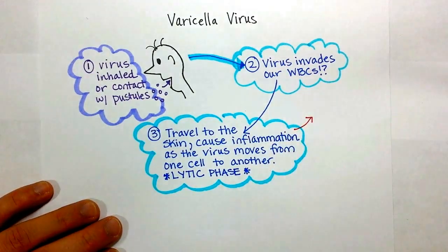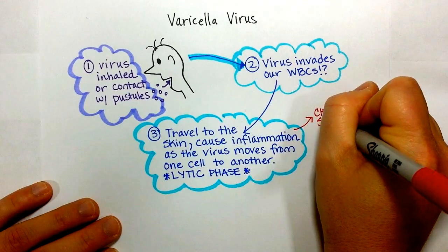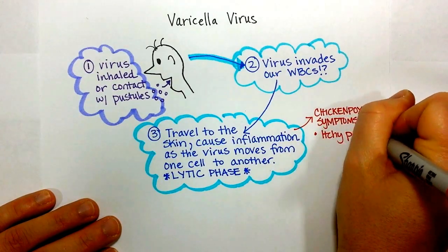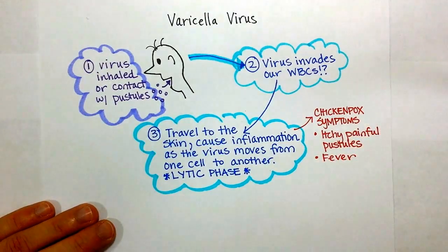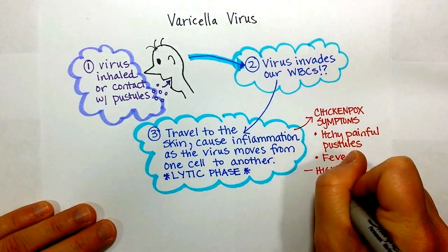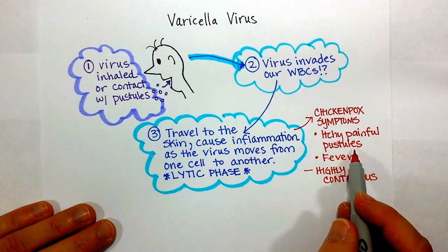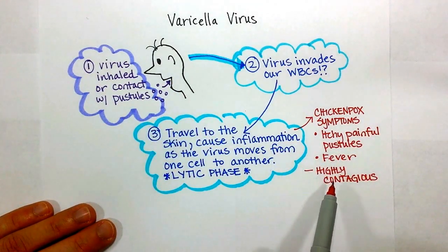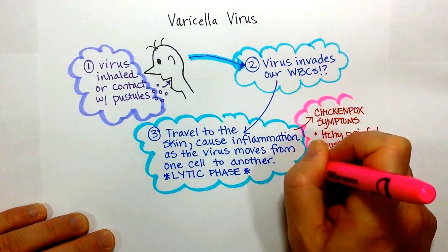The chicken pox symptoms caused by varicella virus include itchy, painful pustules and a fever, because it is a systemic illness. Note that it is highly contagious. The virus is rampant in those pustules, so if a child itches the pustules and gets some of the virus under their fingernails and touches something else, another child could get it. Also, because it's systemic and began in the respiratory tract, coughing could actually spread the virus as well. These are the classic symptoms of chicken pox caused by varicella.